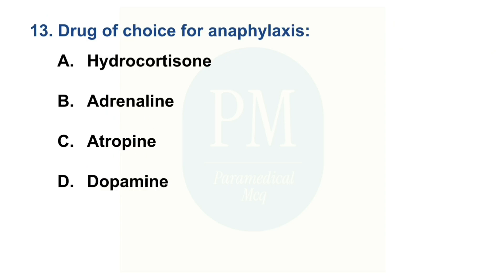Drug of choice for anaphylaxis. Option A: Hydrocortisone. Option B: Adrenaline. Option C: Atropine. Option D: Dopamine. The correct option is Option B — Adrenaline.